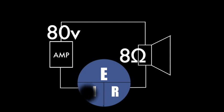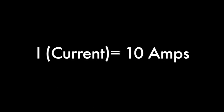All we need to do now is cover the symbol for current, and the equation will be revealed to us, E divided by R. We know that our voltage, in this case, is 80 volts, and that our resistance is 8 ohms. So we simply divide 80 by 8, giving us a 10 amp fuse.